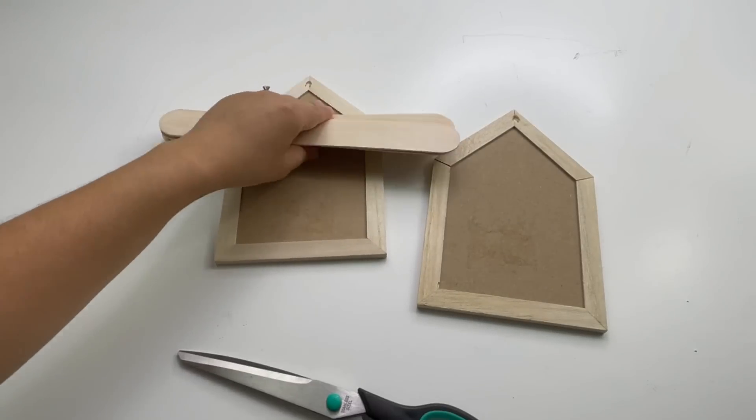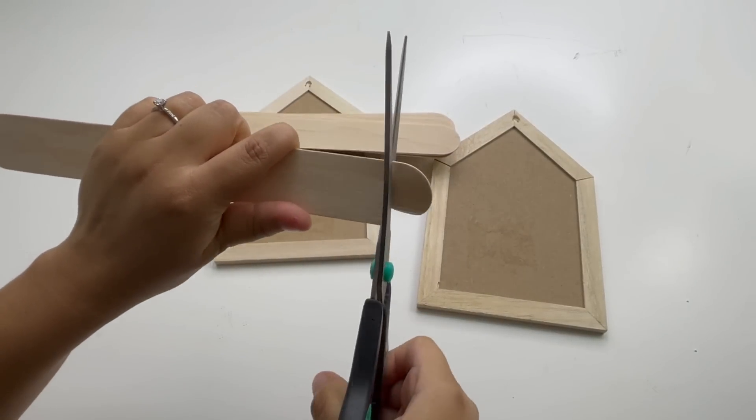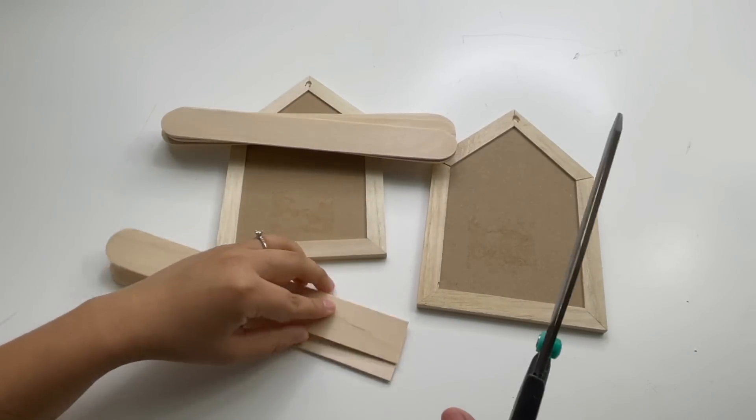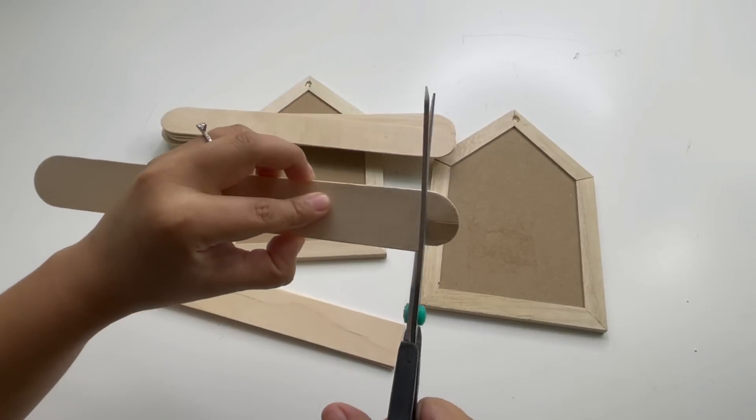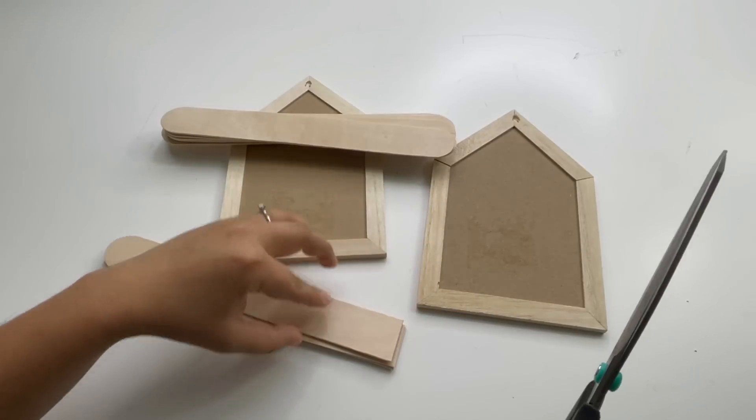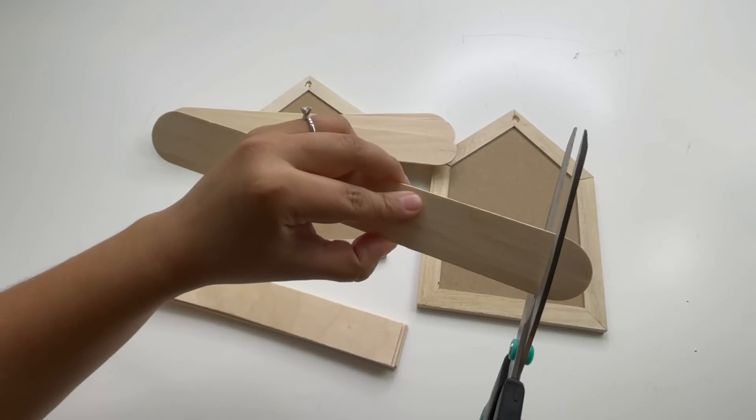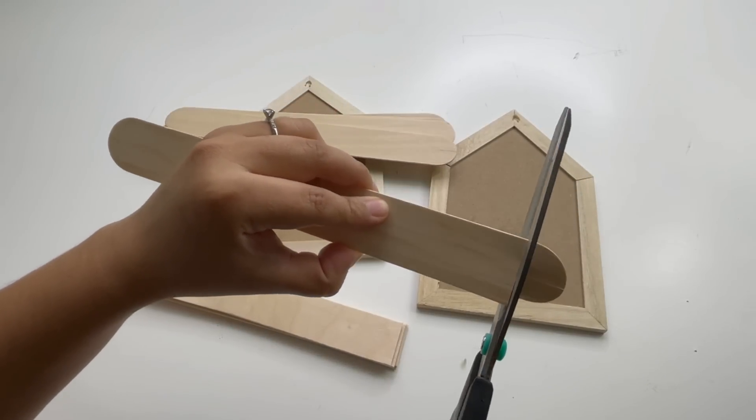I'm going to start by cutting all the edges of the popsicle sticks. Now for this I started with one side first, and then I used some painters tape to tape them together, and then I used my handsaw to cut this so that everything was nice and straight.